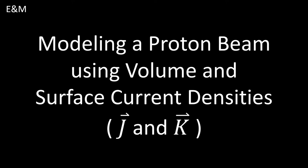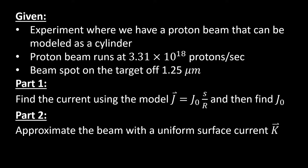All right, so we have a pretty interesting problem here where we're going to be modeling a proton beam using volume and surface current densities, J and K respectively. J is going to be our volume current density and K is going to be our surface current density. We're going to use these to model our total current and also calculate a couple of constants. Let's get into the nitty-gritty details of the problem and get started.